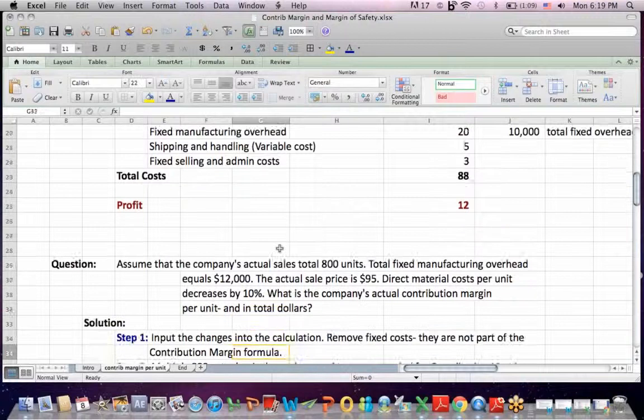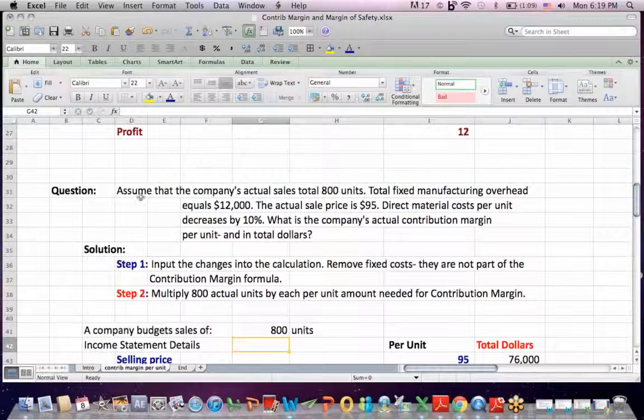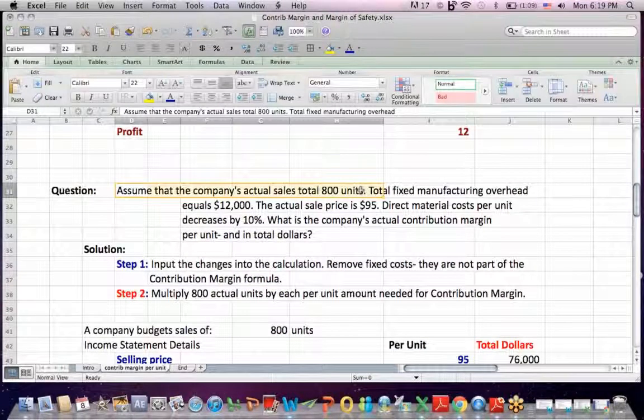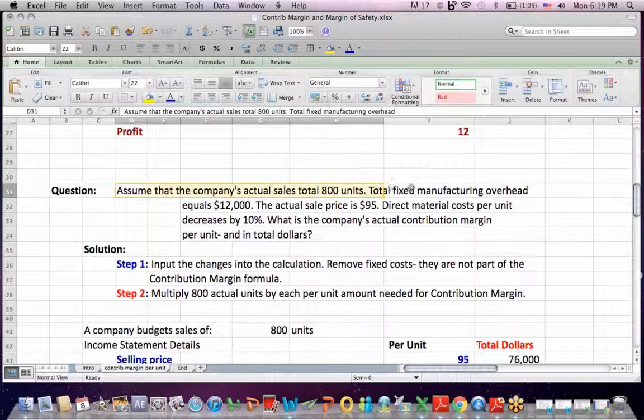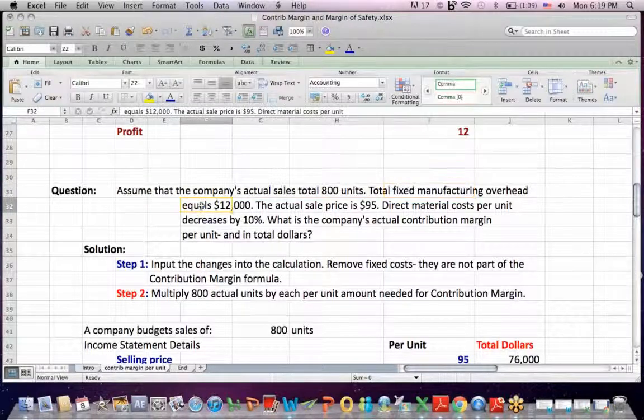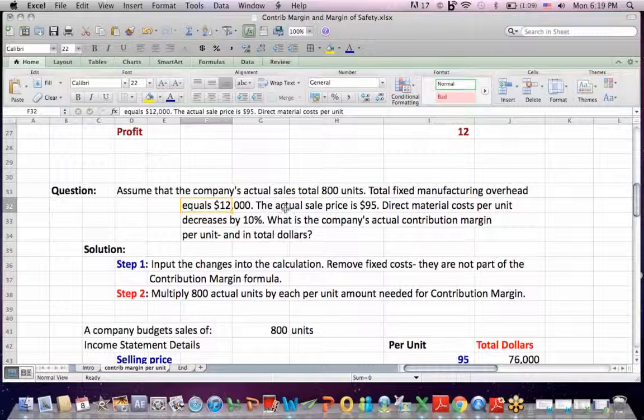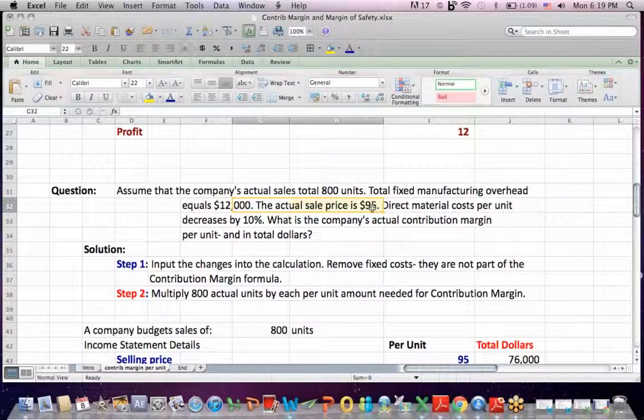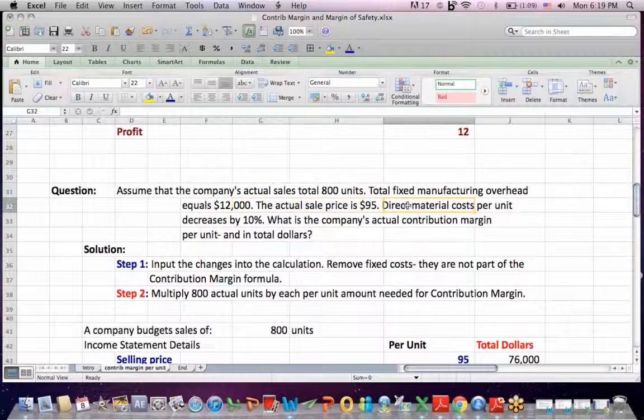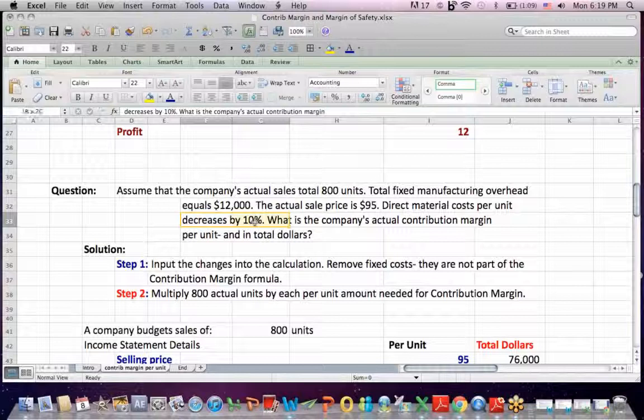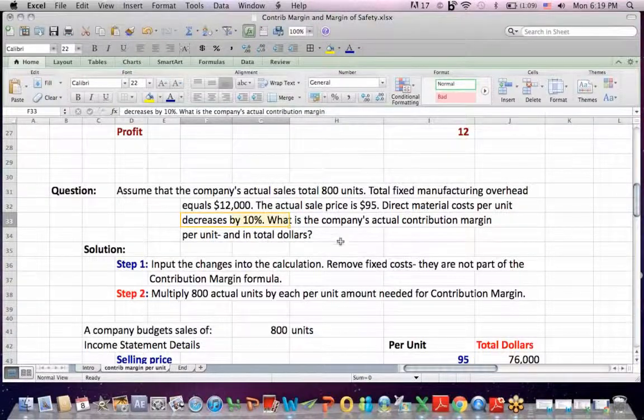Let's change the scenario. Assume the company's actual sales go to 800 units. They increase. The total fixed overhead equals $12,000. The actual sale price is $95 a unit. And direct material costs decrease by 10%. So we've got changes in the scenario.